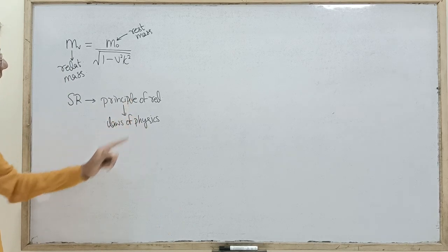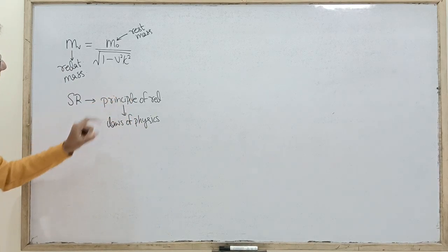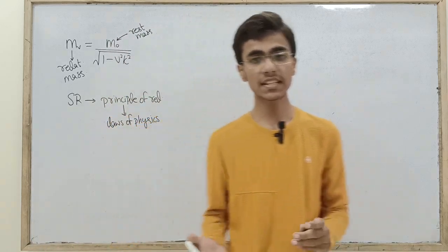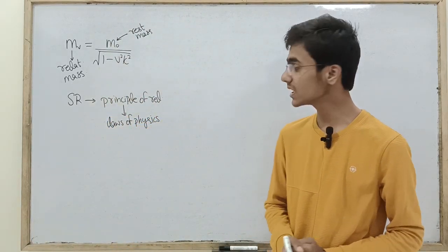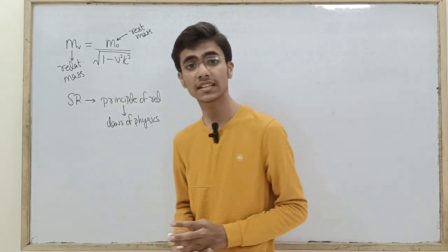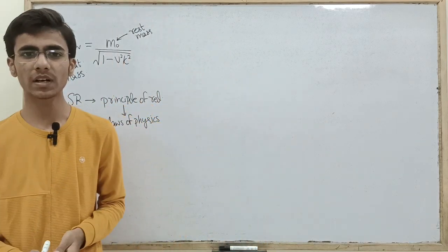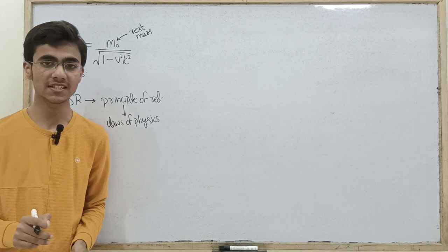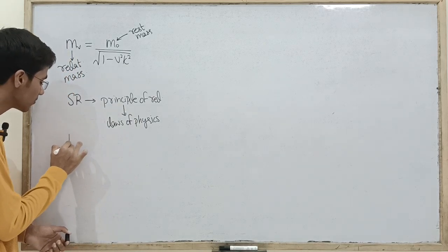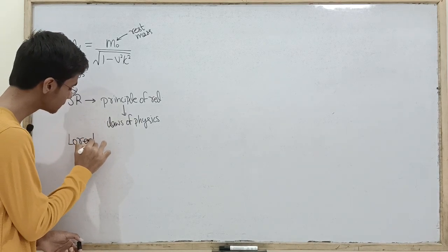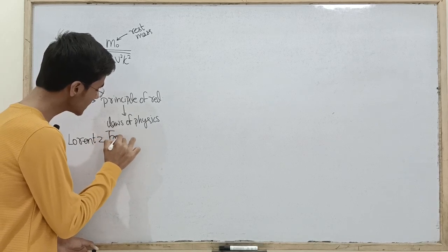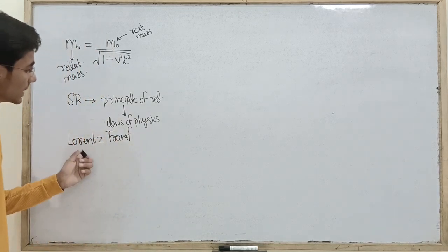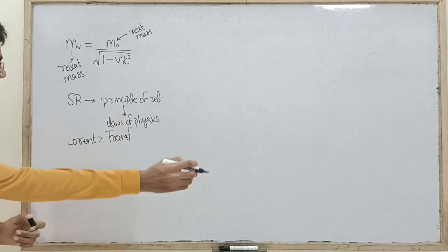Now, in the principle of relativity, if you basically have the Galilean transformation, certain equations like Maxwell's equations lose their form and have a different form — you cannot rightly transform them under Galilean transformation. So here is the introduction of Lorentz transformation. Under Lorentz transformation, Maxwell's equations remain in the same form.